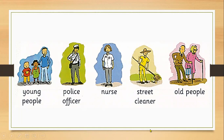As you can see, we discussed different people — some are young people, there is a police officer, a nurse, and a street cleaner, and there are also old people. These are the different people you can find in your neighborhood.